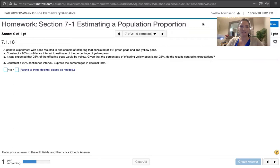The problem statement says a genetic experiment with peas resulted in one sample of offspring that consisted of 443 green peas and 155 yellow peas.